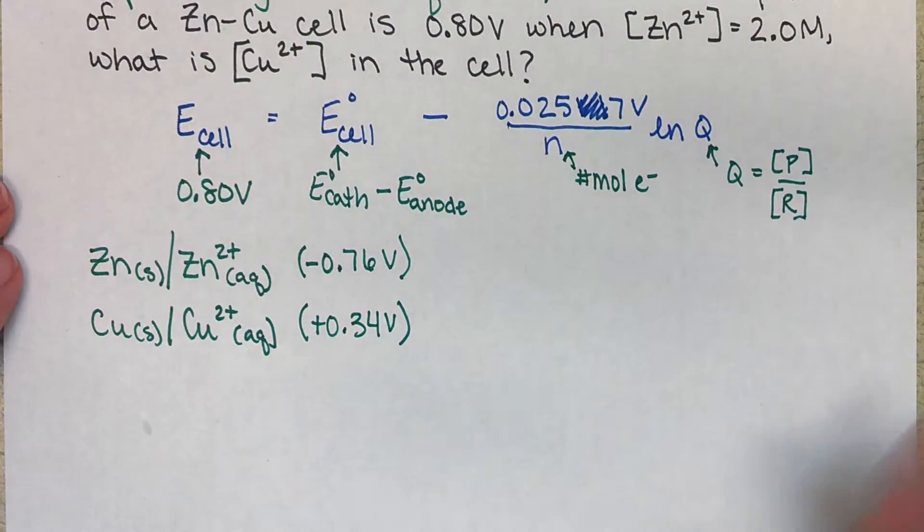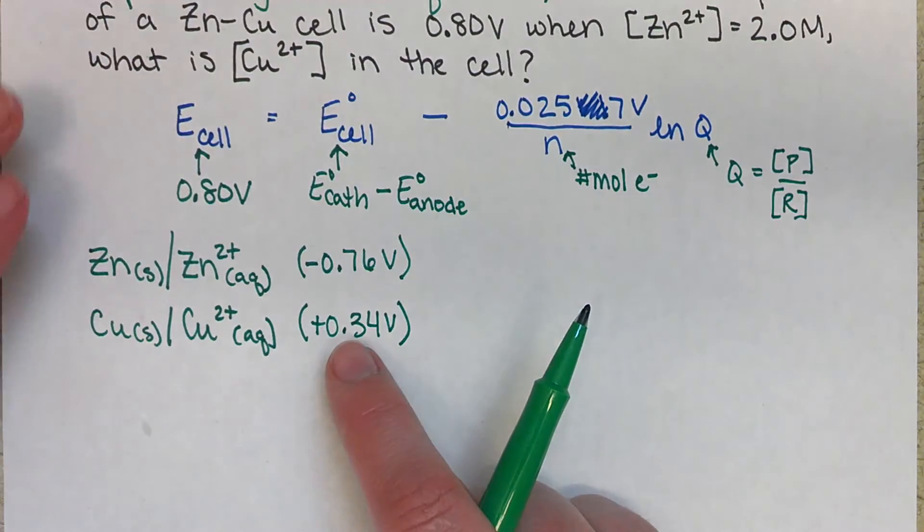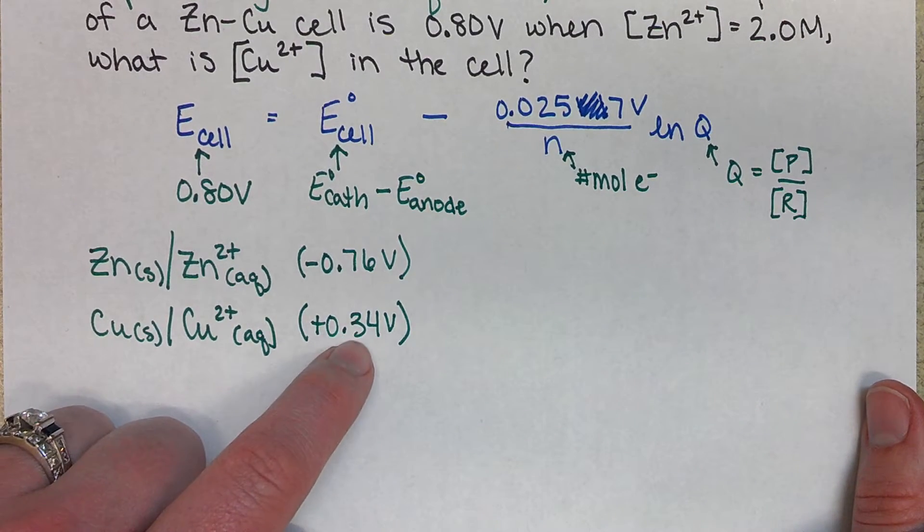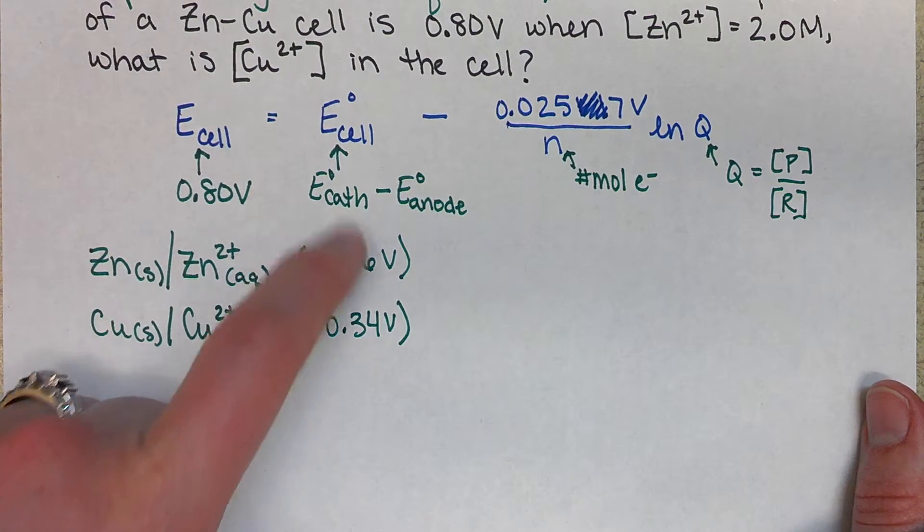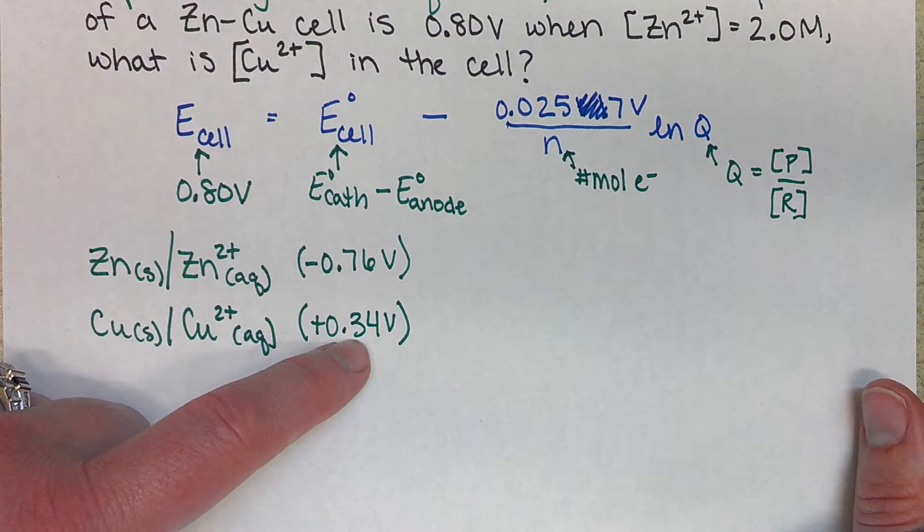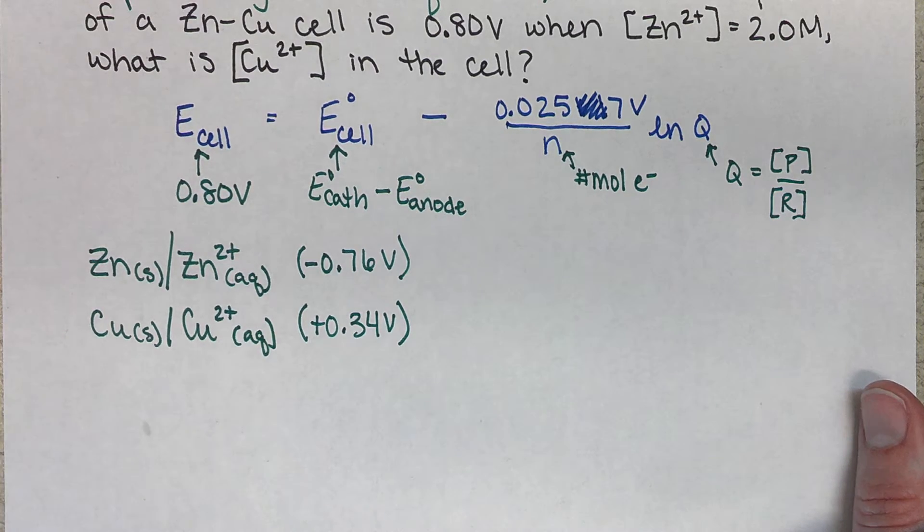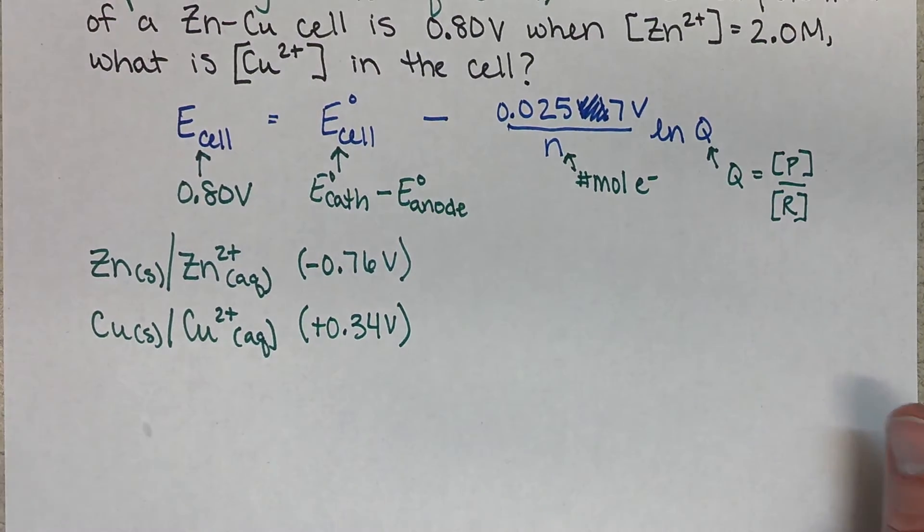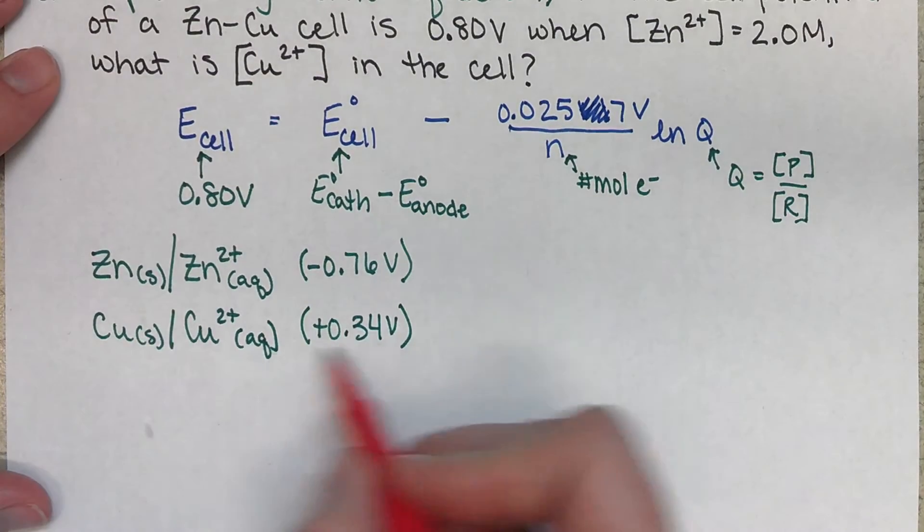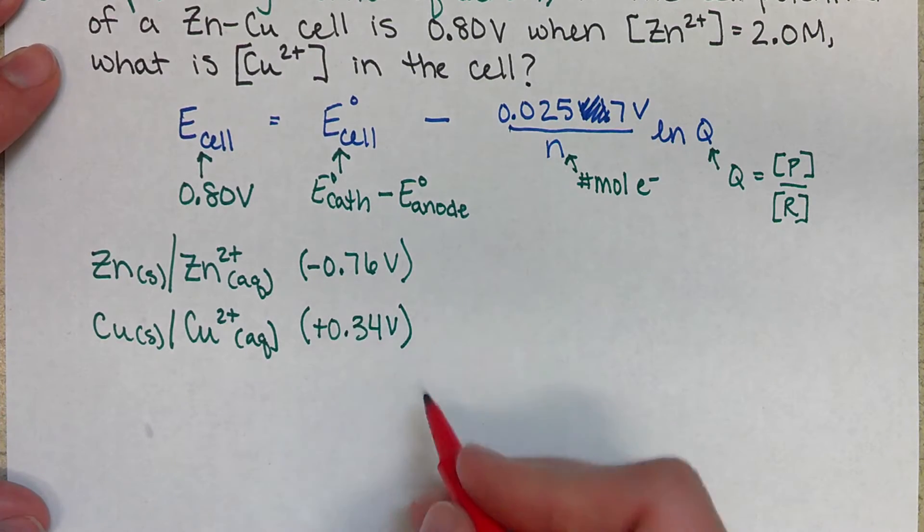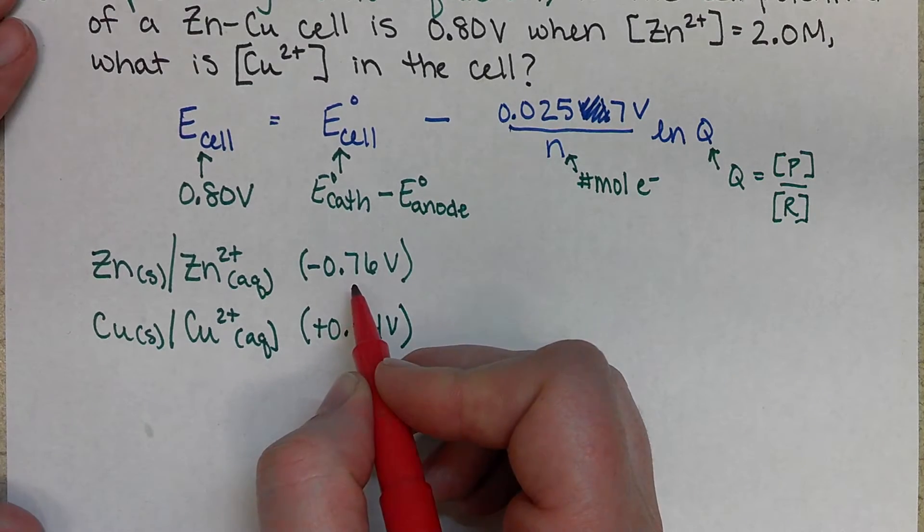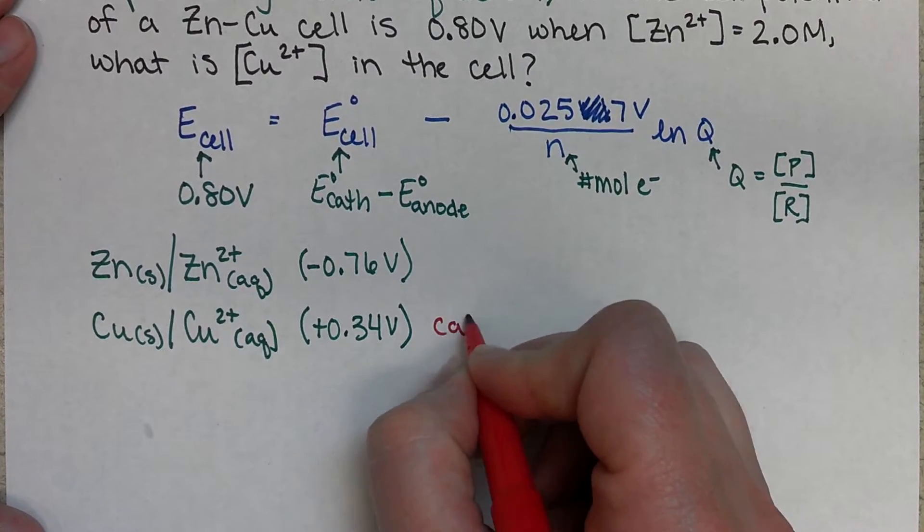So in order for our E-cell standard to be positive for a spontaneous cell, we have to have our 0.34 listed first. So that's going to be our cathode. The other indication is that the 0.34 was higher up on the table, so remember whatever's on top of the table is going to be the cathode for a spontaneous reaction. By knowing that we have this positive value versus negative value, this one's higher up on the table than our negative 0.76. That makes copper here our cathode.